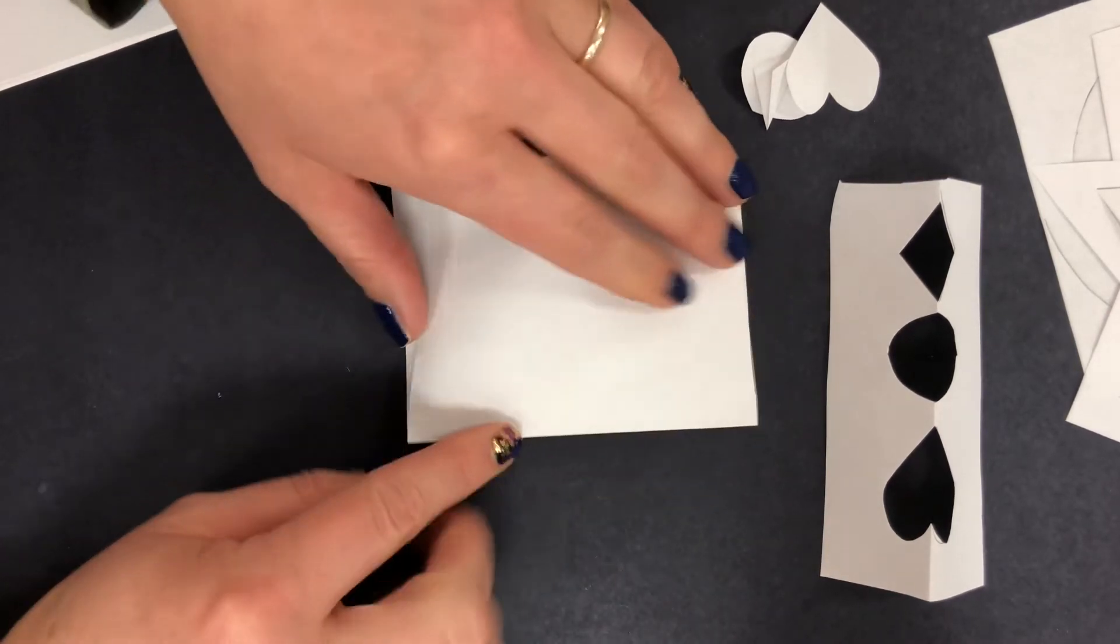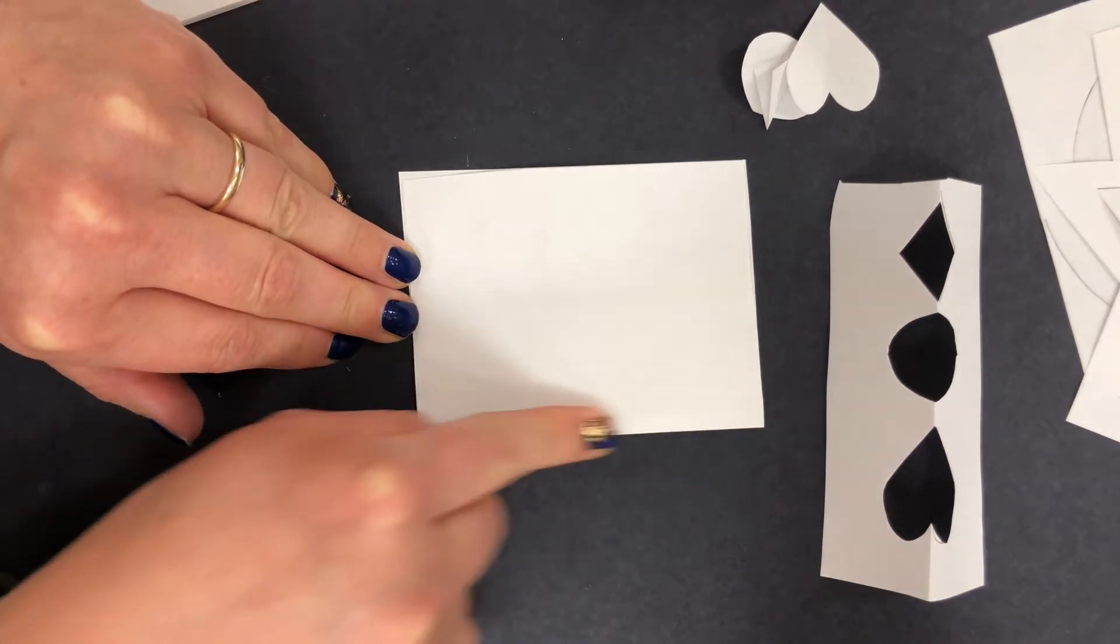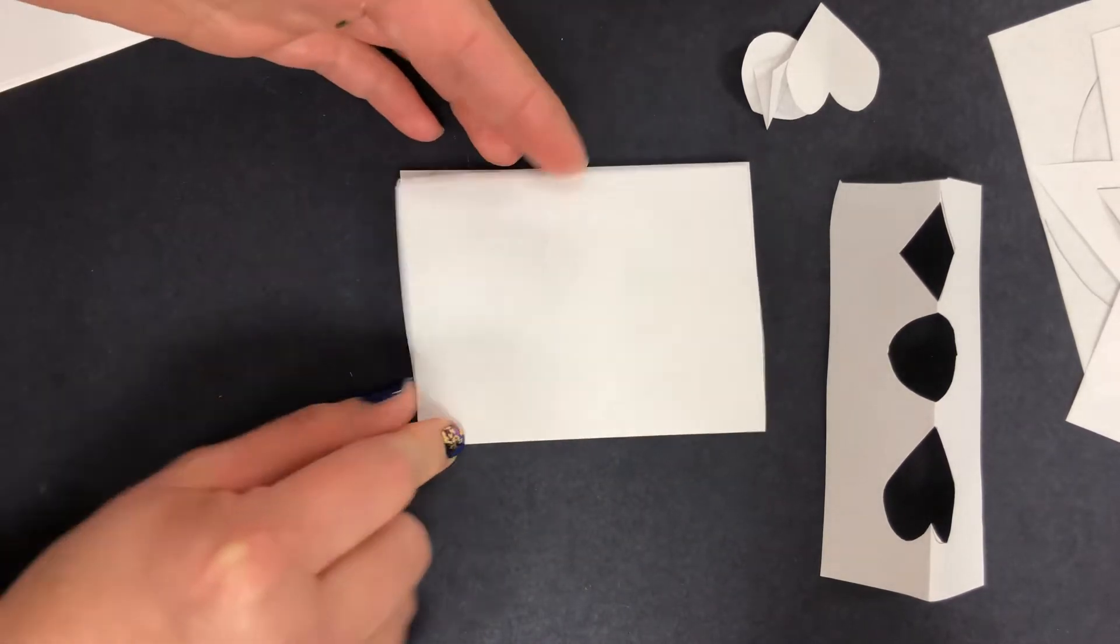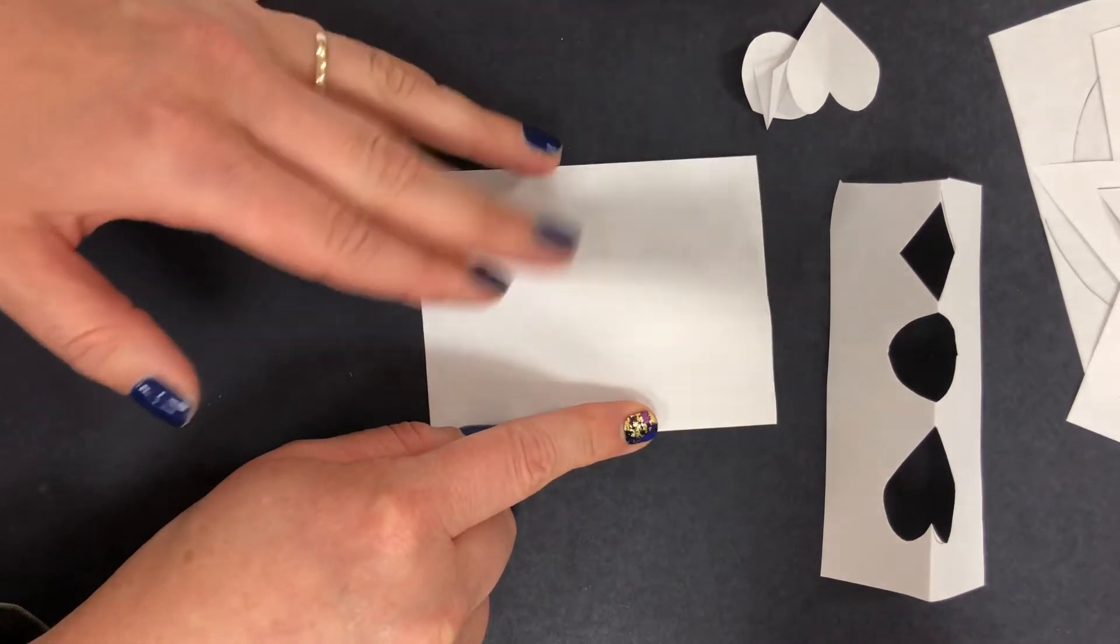Alright, so I have the folded side. If you folded your paper in half, go ahead and find the folded side, the creased side. You're going to cut or draw what you want to cut on the folded side, not on the open side.